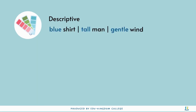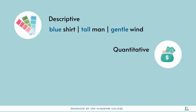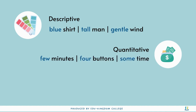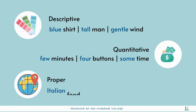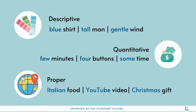Descriptive adjectives tell us characteristics such as height, personality, or colour. Quantitative adjectives are used to specify how much of a noun there is. Proper adjectives, like proper nouns, will always have a capital letter. They usually tell us what country a person or object is from.